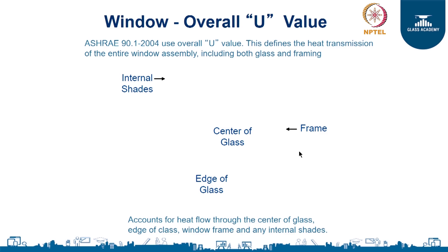When we look at the U-value, we typically look at the assembly of the envelope and not the individual component. For example, you will have glass and a frame around it, or some material around the glass to create an aesthetic effect or to fix the glass on the envelope. When we do the U-value calculation we take both materials together because it is the assembly which matters. Typically the assembly needs to be tested in a lab, and you get the U-value to use in simulations for a more accurate perspective on conductive heat transfer.